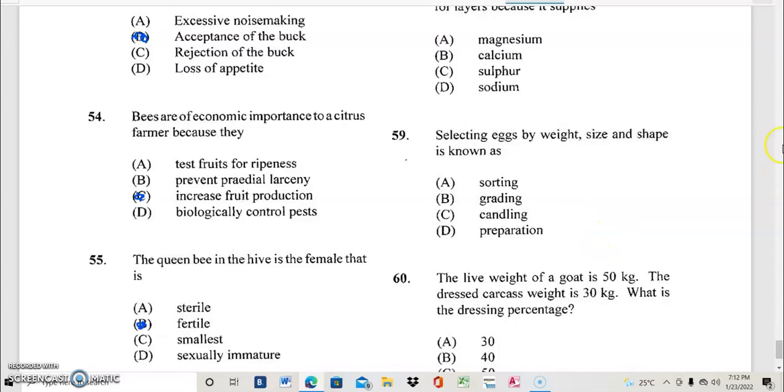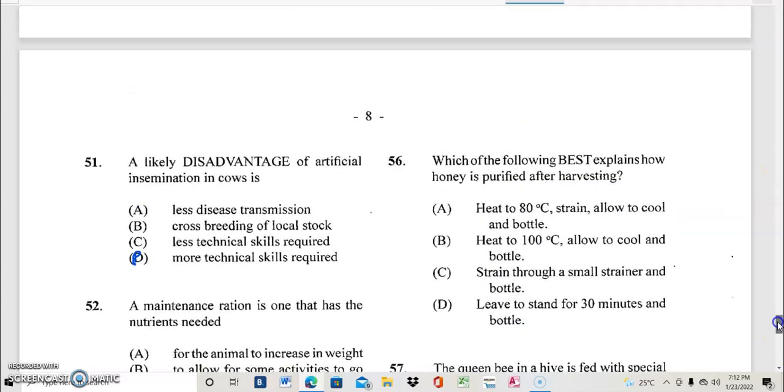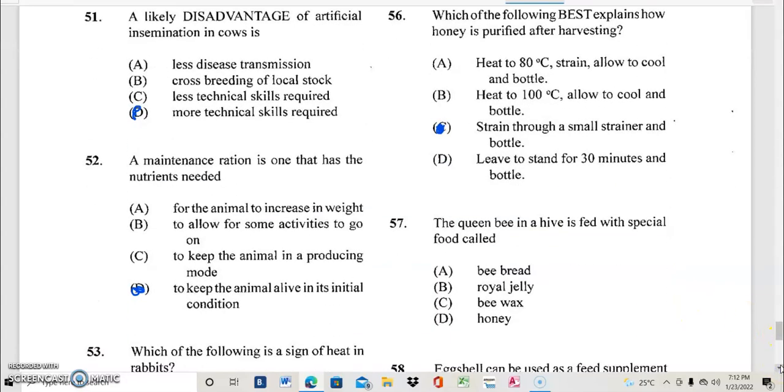Question 56. Which of the following best explains how honey is purified after harvesting? And the answer to question 56 is? If your answer is C, it is strained through a small strainer and bottled, you are very correct. So the answer to question 56 is C.